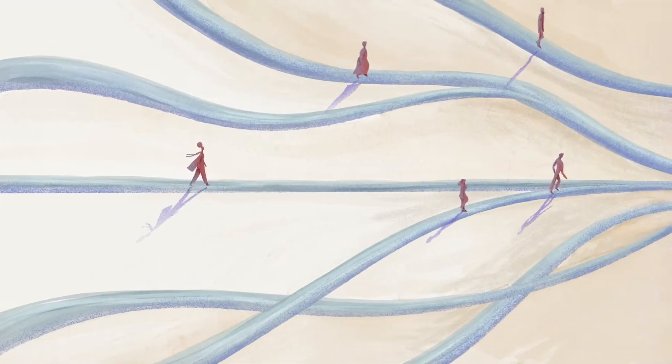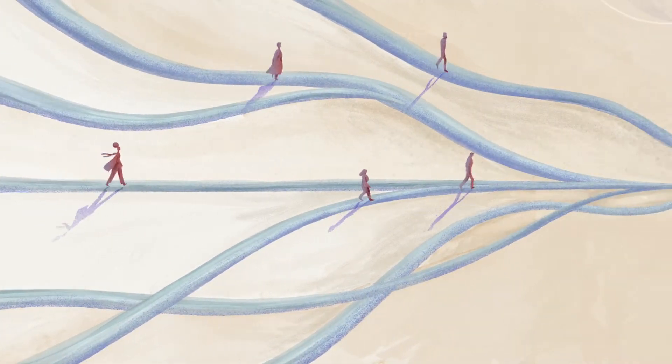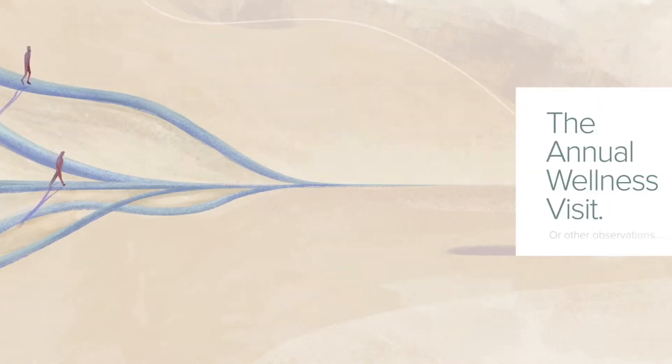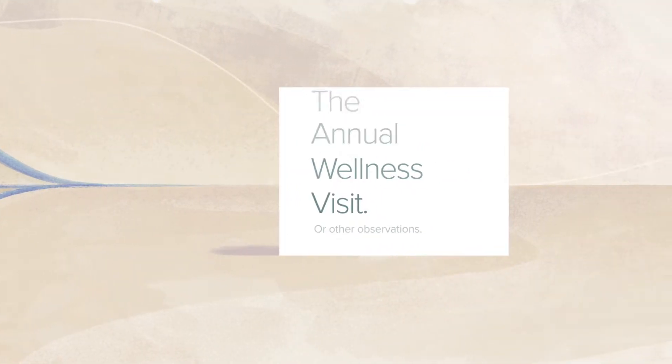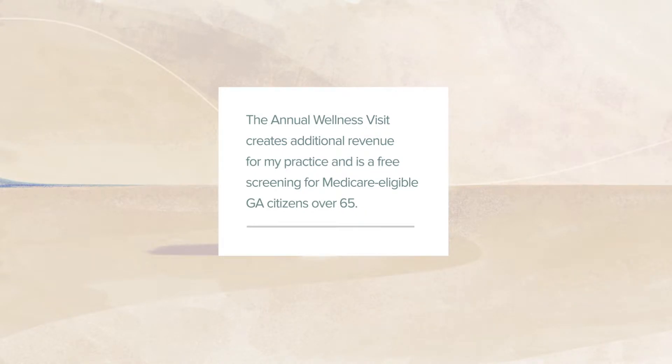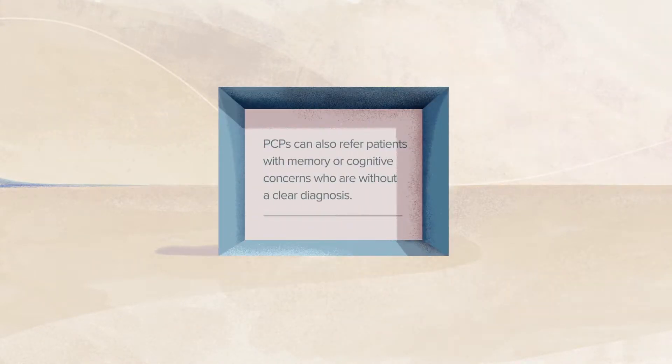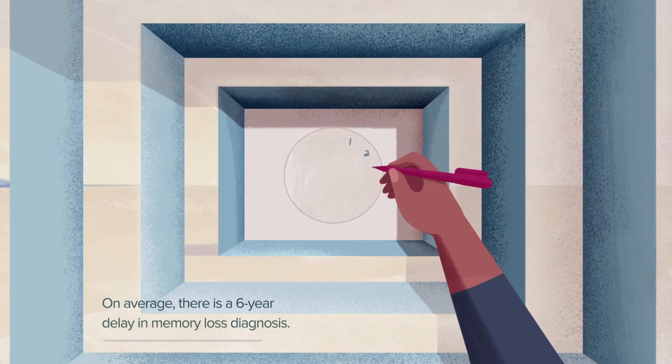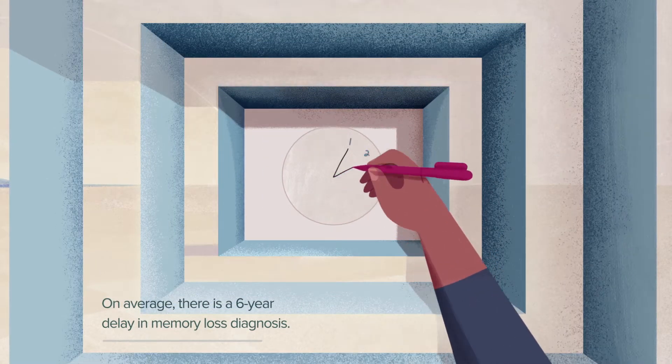The first step in this journey is identifying patients in need of dementia diagnosis through the annual wellness visit or other observations. Properly identifying signs and symptoms of cognitive decline as early as possible is crucial for my patients care and planning.